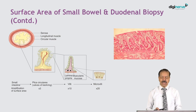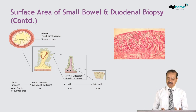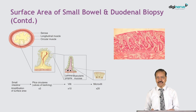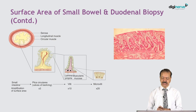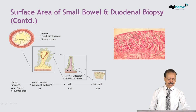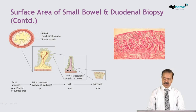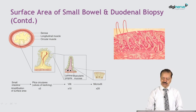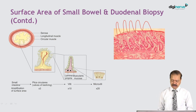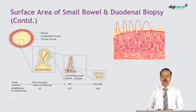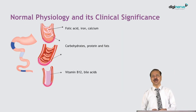From the duodenal biopsy we can assess mucosal architecture using the Marsh classification, typically used for celiac disease. In this patient's duodenal biopsy, there is hardly any villi — it is flat — indicating partial to subtotal villus atrophy, which decreases the absorptive surface area of the bowel.